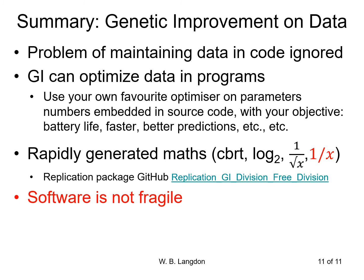To summarize: the problem of maintaining data within code has been largely ignored. We've shown that genetic improvement can improve not just source code but data within existing programs. You might want to use your own optimizer with objectives like improving battery life, making code run faster, or giving better predictions. Here we've concentrated on evolving mathematical functions by transforming the original square root function — we've shown we can generate cube root, log base 2, inverse square root, and the reciprocal function. The replication package is available on GitHub.